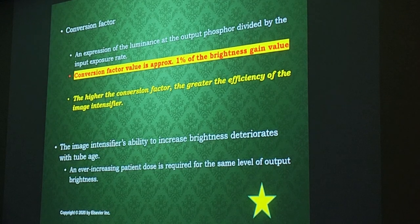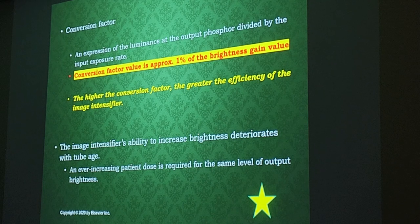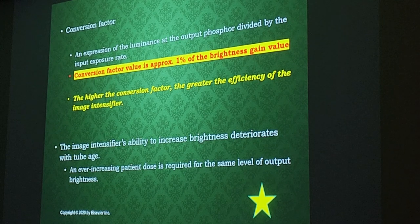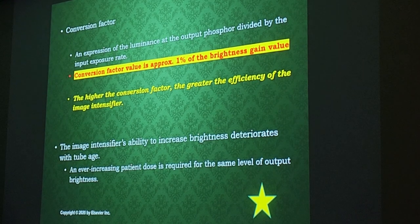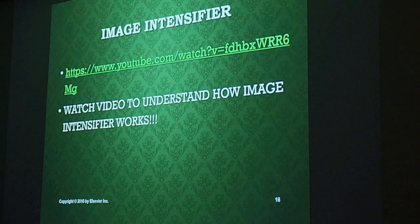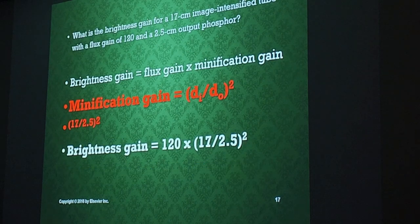You don't have to know the conversion factor formula or do problems for the test — just know your brightness gain formula: BG equals FG times MG. It's on your slides.